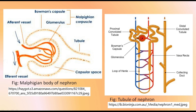In the glomerulus, the afferent arteriole and the efferent arteriole can be seen. The tubule of the nephron has different parts: the proximal convoluted tubule, the loop of Henle, the distal convoluted tubule, and the collecting duct.